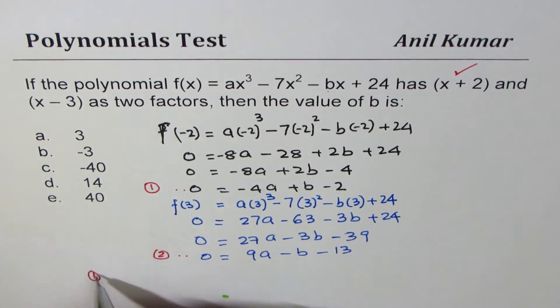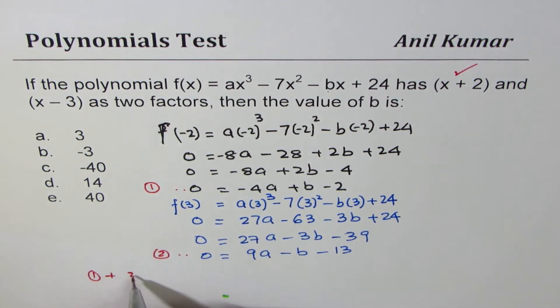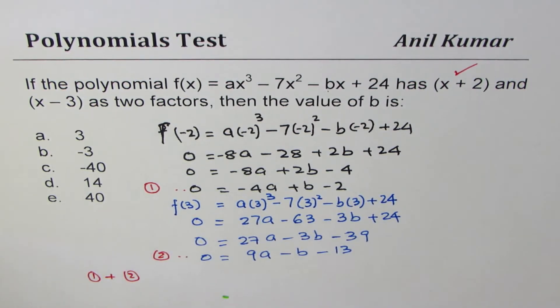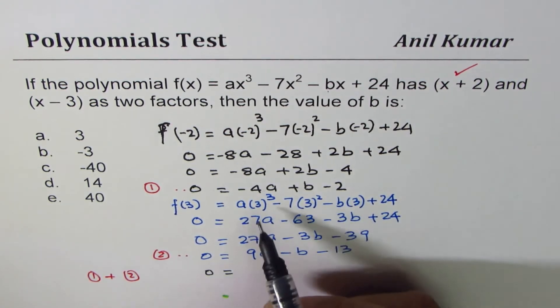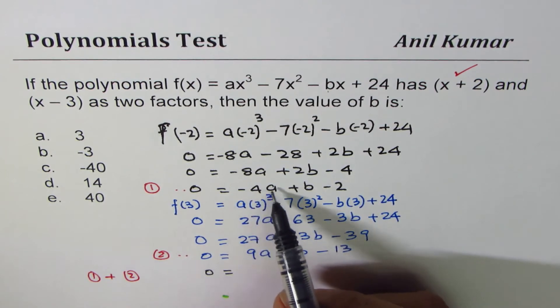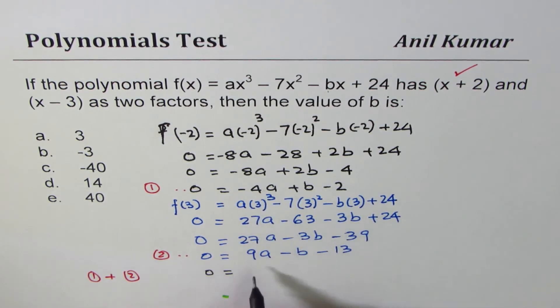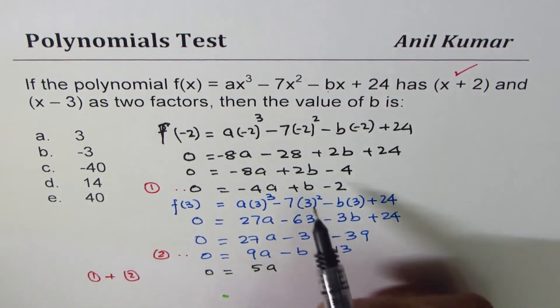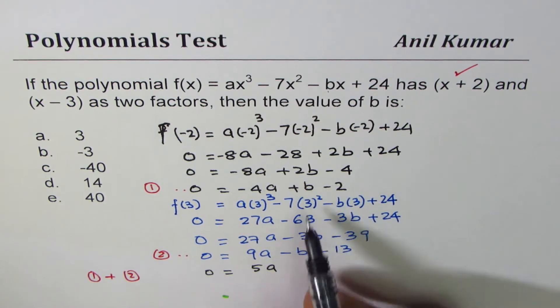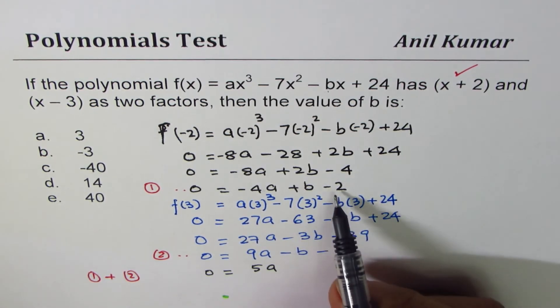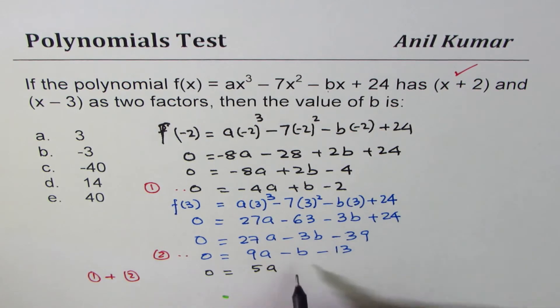So, let's do that at least. So, now we'll do equation 1 plus equation 2. So, we'll add these two equations, correct? So, what do we get? We get 0 equals to -4 + 9 gives us 5a, -b,